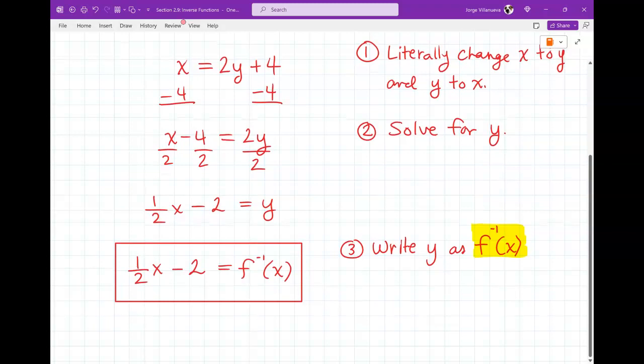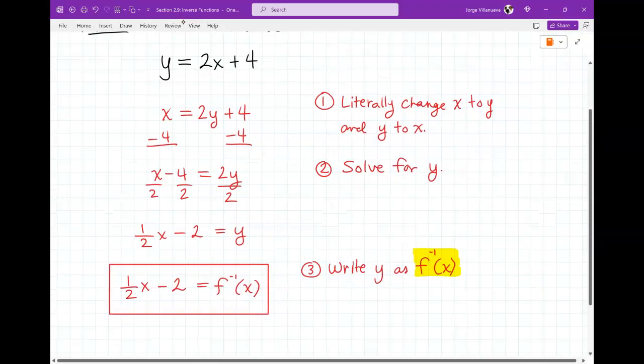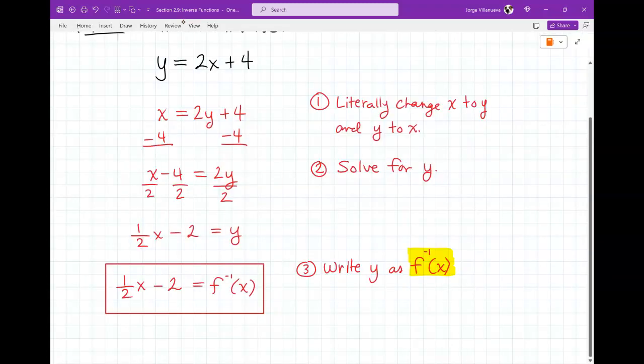Three steps. Step number 1, literally change x to y and y to x, not by moving things around, not by doing anything special, you are literally just changing x to y and y to x. Second step, you solve for y, just like you would normally do with any equation. And then once you have y solved for, you're going to rewrite the letter y as f inverse of x. Questions on this one? Three steps. So hopefully this doesn't seem too difficult, but that's it, that's what you guys are doing for homework. So let's do a couple problems here.